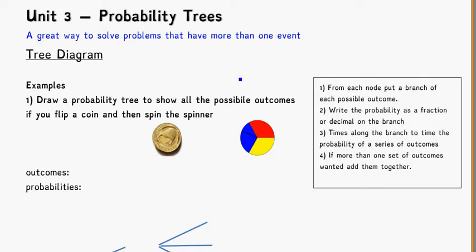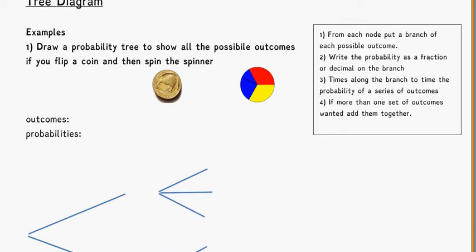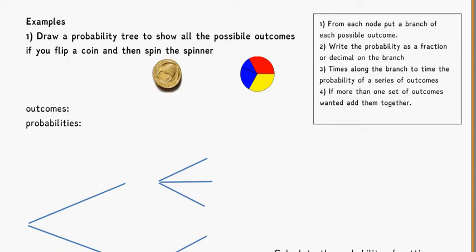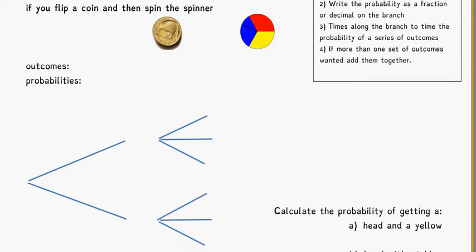Probability trees are really great ways for solving problems that maybe have more than one event, or something that happens a few times, and it's helpful to try to diagram out all the possibilities that might happen. So if we're looking at doing probability trees, some important steps are to show, kind of in a picture, all the possible outcomes. If I'm going to draw a probability tree to show all the possible outcomes if I flip a coin and then spin the spinner, my probability tree will look something like what I'm showing below, but we have to fill in the details.